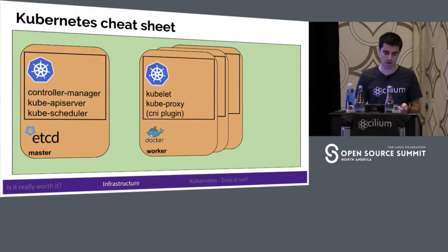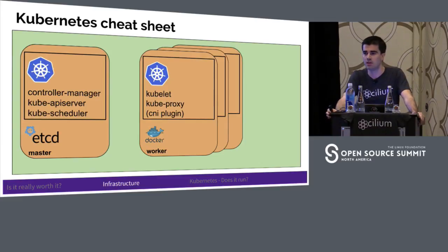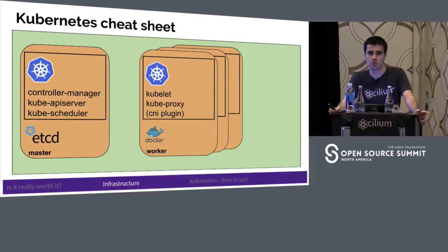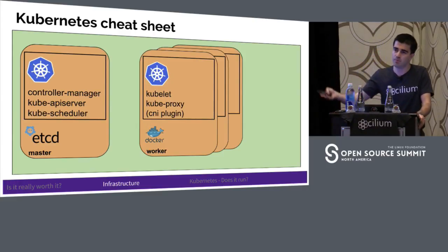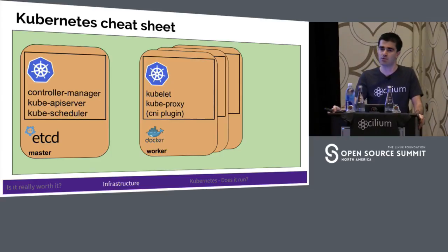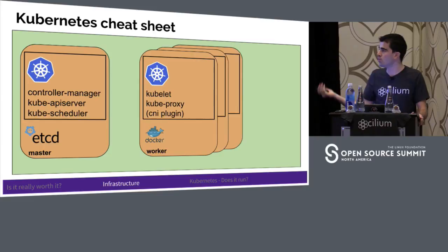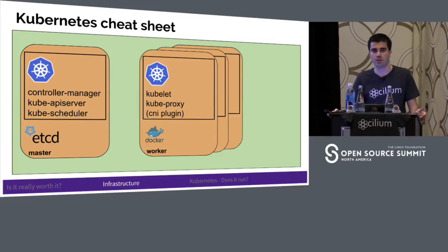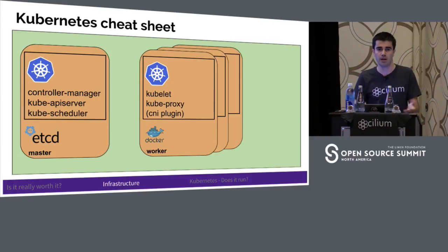Let's deep dive. This is a normal Kubernetes cluster. You have a master — and you can have multiple masters — and usually multiple workers. On the master side, you have the controller manager, the API server, the scheduler, and etcd, which stores all the data. On the worker side, you usually have a container runtime, kubelet, kube-proxy, and the CNI plugin to manage all the networking for containers running on the worker.